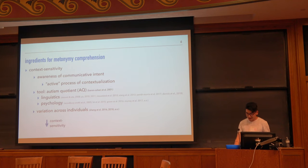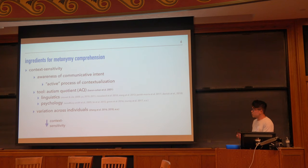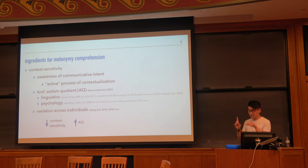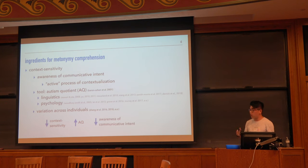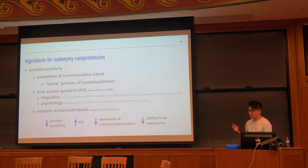We've used this tool across several studies and have found systematic variation across individuals in this measure. The lower your context sensitivity, the higher your AQ is going to be — the scale goes the other way. This means you're going to have lower awareness of communicative intent and you'll have a harder time doing metonymy.